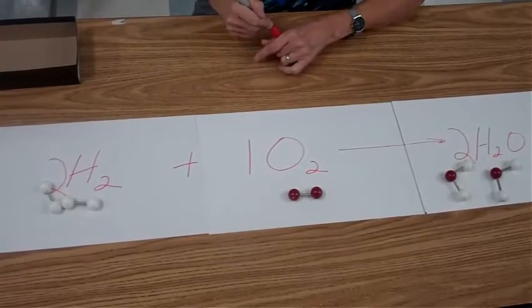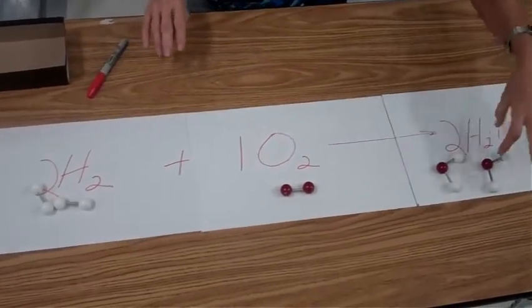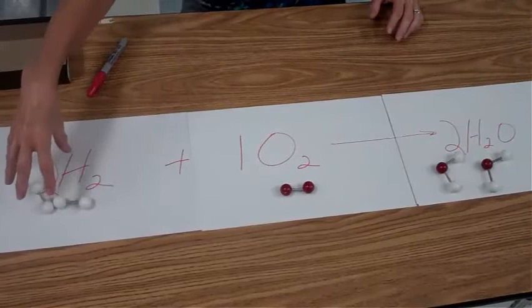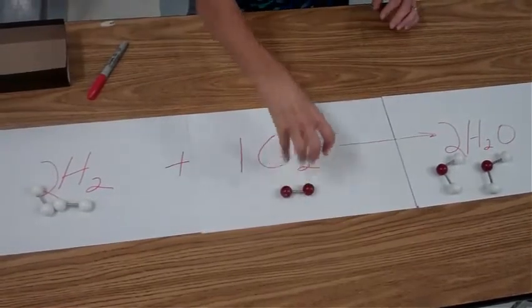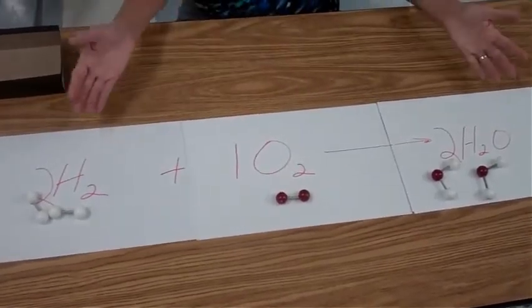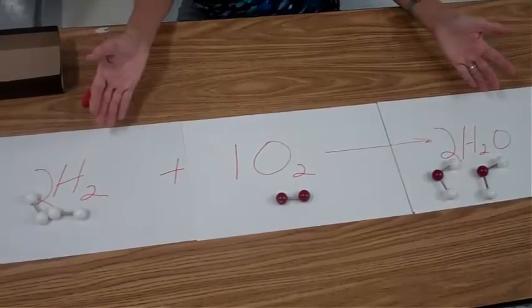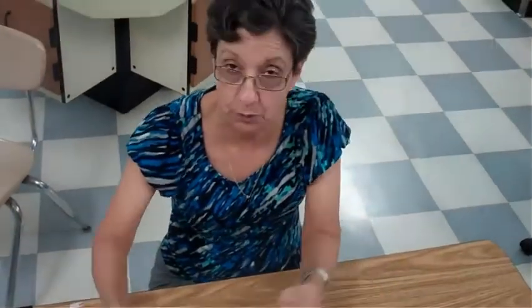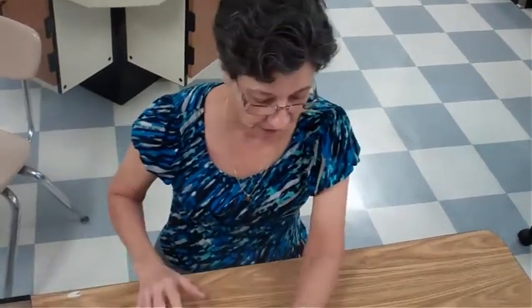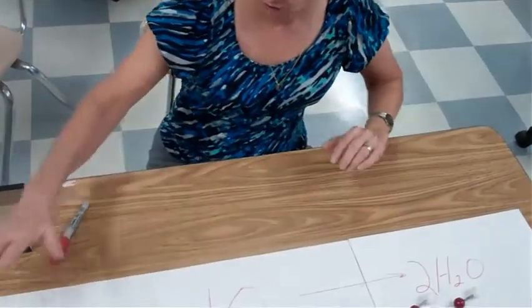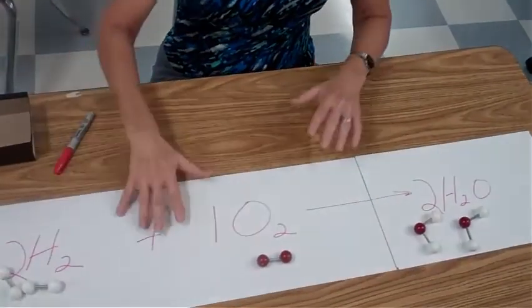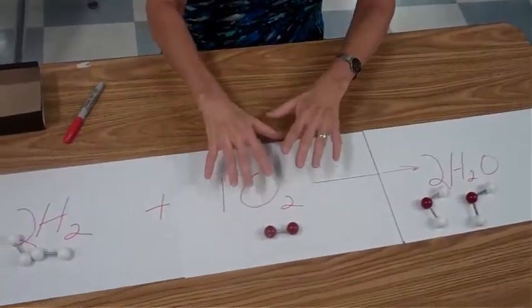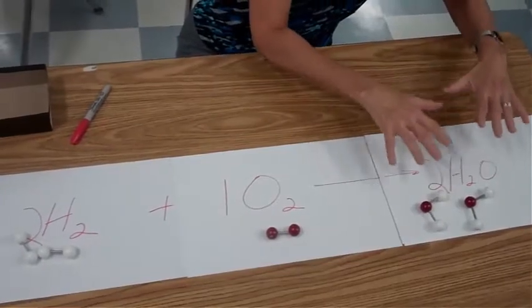Now my totals are correct. I have a total of four hydrogens — the whites are the hydrogens — four hydrogens over here, two oxygens here, two oxygens here. So what happened in this chemical reaction? We did not change the number of atoms at all, but we changed the rearrangement. We rearranged the molecules in a different form, starting out with hydrogen and oxygen, producing water. 2H₂ plus 1O₂ produce two molecules of H₂O. That's it.